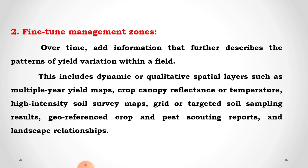The second step is to fine-tune the management zone. This includes dynamic and qualitative spatial layers such as multiple-year yield maps, crop canopy reflectance or temperatures, high-intensity soil survey maps, grid or targeted soil sampling results, geo-referenced crop and pest scouting reports, and landscape relationships. Over time, add information that further describes the patterns of yield variation within a field.